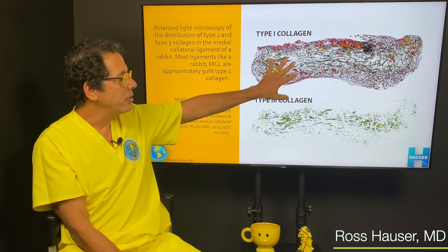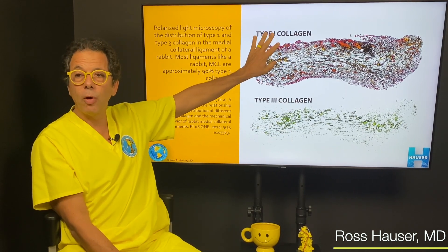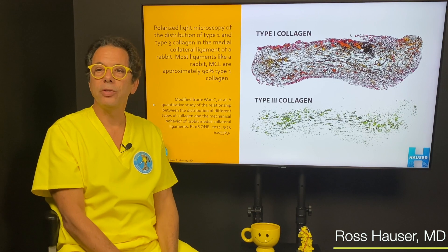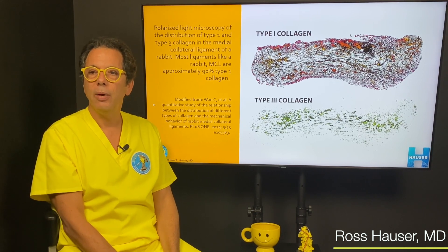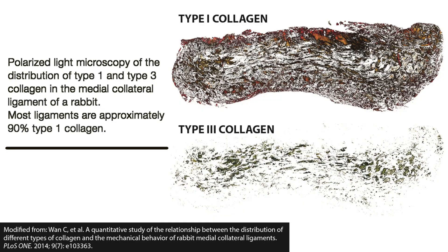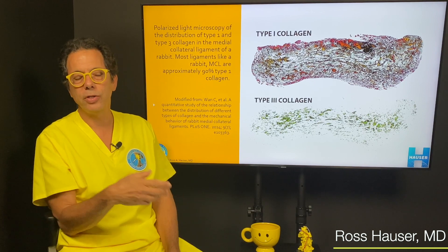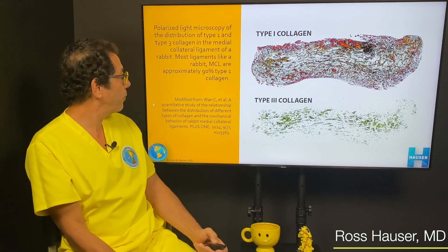This is histology — this is a medial collateral ligament. When they look at it, it's almost all type 1 collagen. Type 1 collagen makes up about 90 percent of the collagen in the body. In Ehlers-Danlos syndrome, the collagen that's loose is the type 1 collagen. Prolotherapy is great at stimulating the tightening and strengthening of type 1 collagen. Type 2 collagen is in cartilage; type 3 collagen is mostly in the blood vessels.